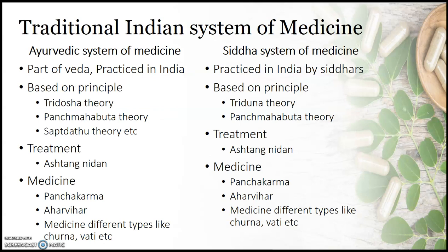In this first chapter, two alternative systems of medicine are discussed: Ayurvedic system of medicine and Siddha system of medicine. Both are Indian systems of medicine practiced and developed in India. Ayurvedic system of medicine has been practiced by Aryans, and Siddha system of medicine has been practiced by Dravidians.